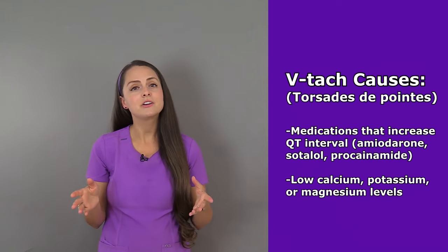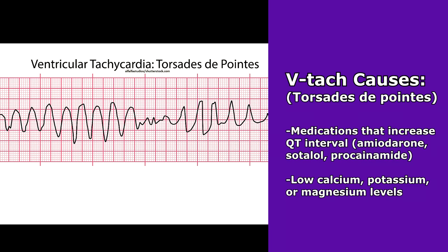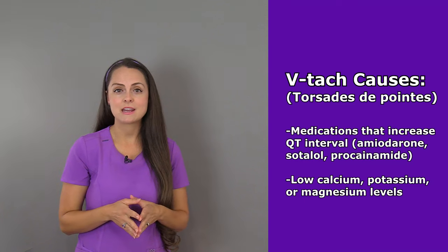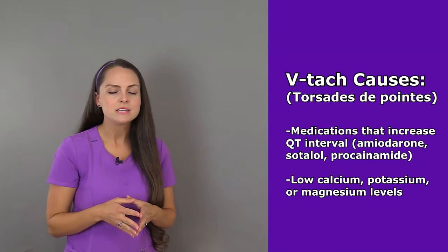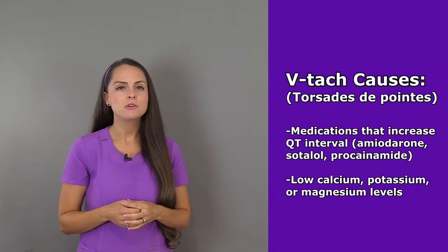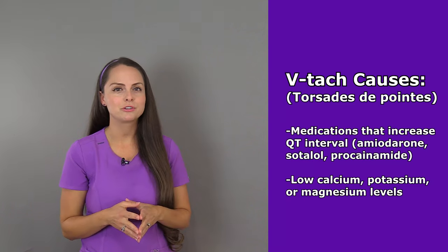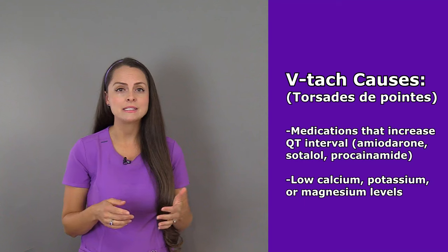But if your patient is in polymorphic VTAC such as torsades de pointes, what could cause this rhythm? One of the most common causes is that the patient is taking a medication that prolongs the QT interval, such as amiodarone, sotalol, or procainamide — so you would not want to give your patient these medications for treatment of this rhythm. In addition, a low calcium, magnesium, or potassium level can cause it.